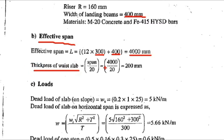Next we find out the thickness of the waist slab using IS456. For a simply supported beam, span-to-depth ratio is equal to 20, so thickness equals span divided by 20. Span length is 4000 mm divided by 20, giving a total thickness of 200 mm.